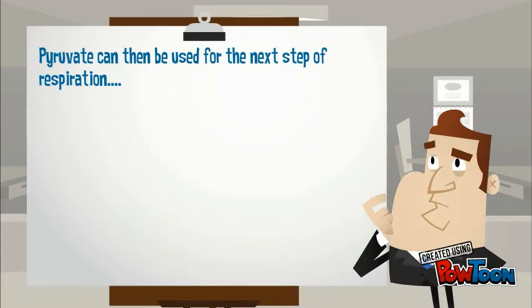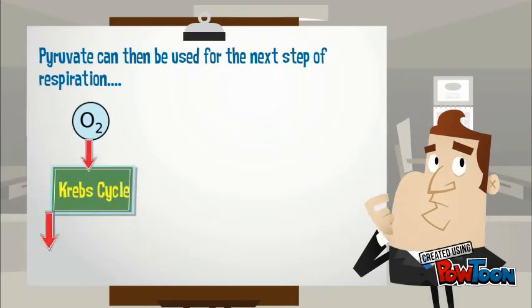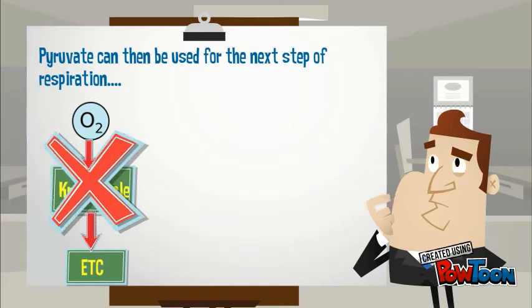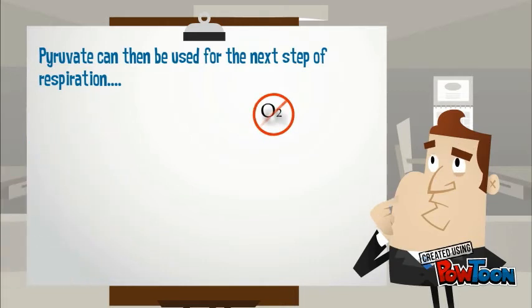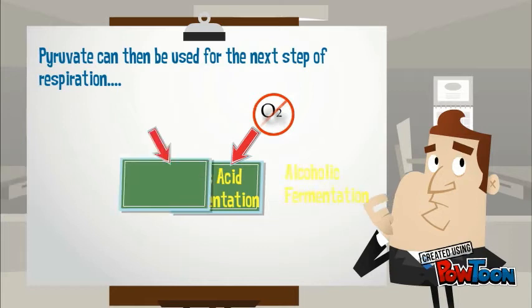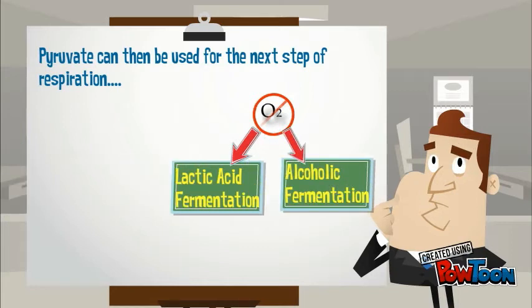The pyruvates from glycolysis can then be used for the next stage of respiration. If there's oxygen present, then it's going to enter into aerobic respiration, where it goes into the Krebs cycle and the electron transfer chain. But we're not going to talk about that right now. We're going to talk about when there's no oxygen present, and it either enters into lactic acid fermentation or alcoholic fermentation.